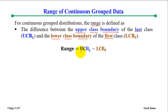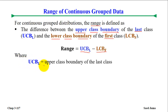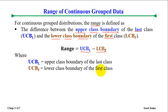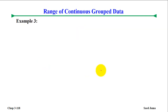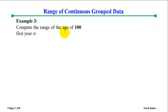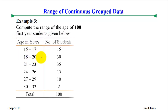The range is equal to the upper class boundary of the last class minus the lower class boundary of the first class. We identify the first class and the last class, then determine their respective upper and lower class boundaries accordingly.